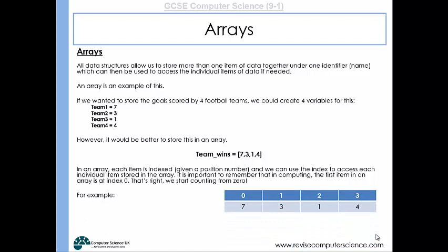If we wanted to access some of that data, for example the first item, we would write team_wins[0]—that's the item in the zeroth index. Team_wins[1] would access the number three, team_wins[2] would access the number one, and team_wins[3] would access the number four.